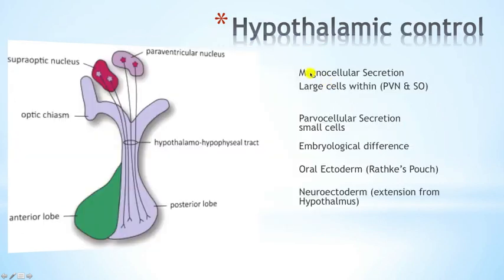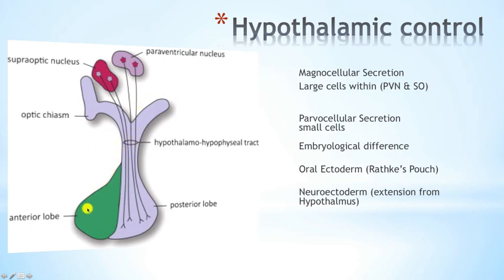In the hypothalamus you have magnocellular secreting cells and parvocellular secreting cells — magno meaning large, parvo meaning small. The magnocellular cells produce two hormones: oxytocin and ADH, which through the hypothalamo-hypophysial tract are directly released to the posterior lobe. This is in contrast to the anterior pituitary gland, which requires a portal circulation. The posterior lobe is actually an extension of the hypothalamus — there is an embryological difference, where the posterior lobe comes from the neuroectoderm and the anterior lobe comes from the oral ectoderm in a structure known as Rathke's pouch. That is why you need the portal circulation for the anterior lobe but a direct connection for the posterior lobe.